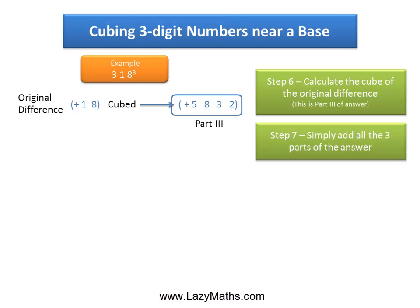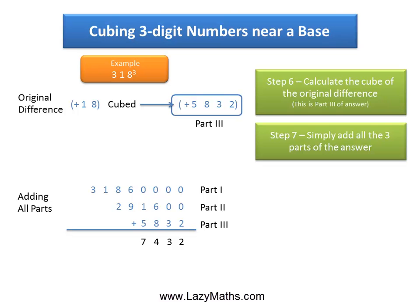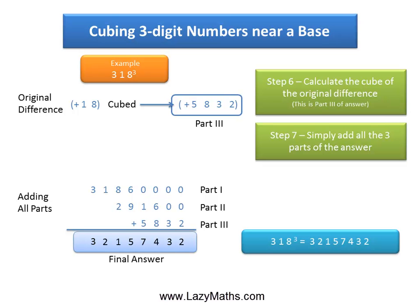Now, because all the parts are positive, simply add all of them together to get the final answer. So the final answer in this case is 32,157,432. In other words, 318 cubed is equal to 32,157,432. And that's it. Thank you.